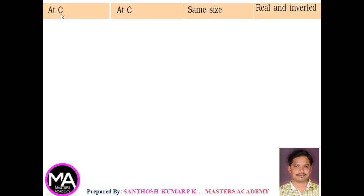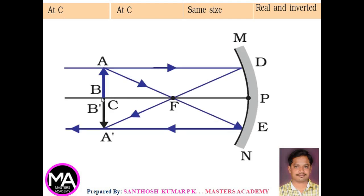Third case: when the object is kept at C, the center of curvature. AB is the object kept at C. Consider two rays: one ray parallel to the principal axis, and another ray passing through the principal focus. After reflection, the ray parallel to the principal axis passes through the principal focus, and the ray passing through the principal focus becomes parallel to the principal axis. These two reflected rays meet, and the image is formed at C — same size as the object, real and inverted.